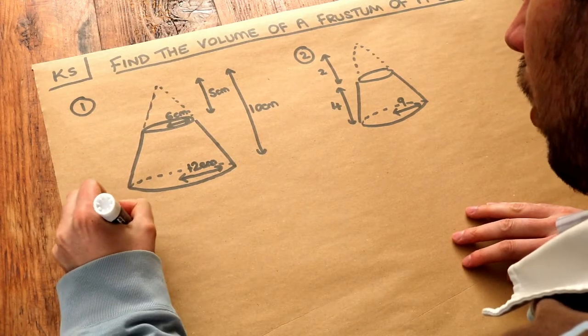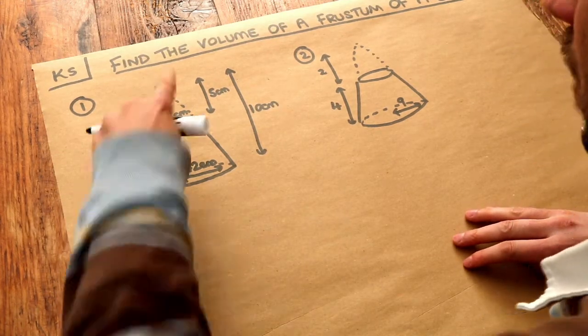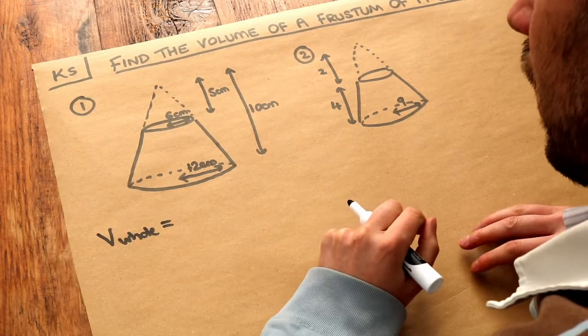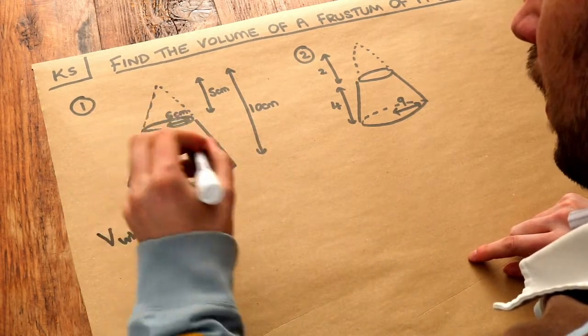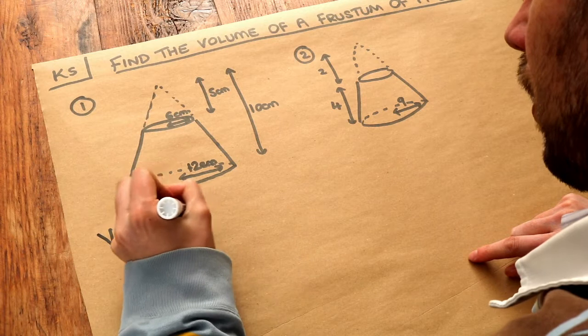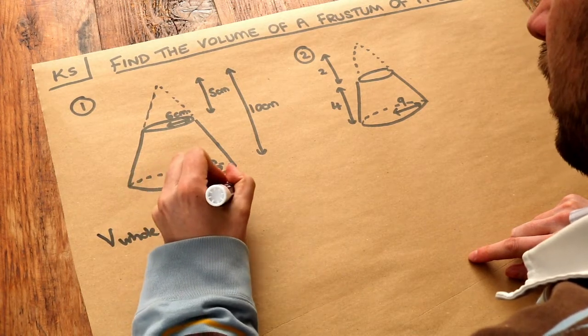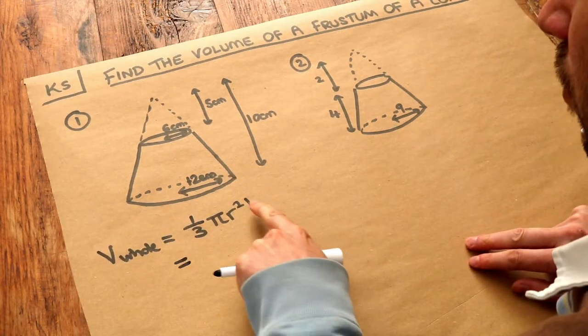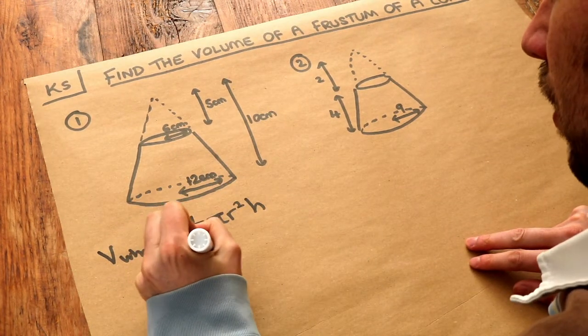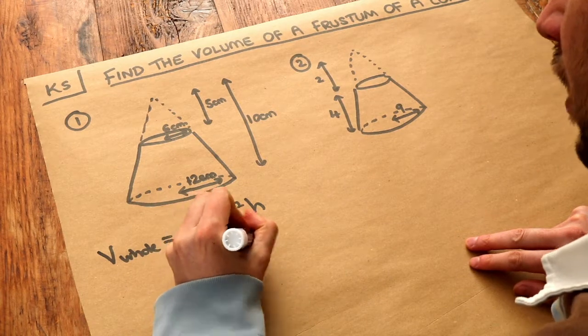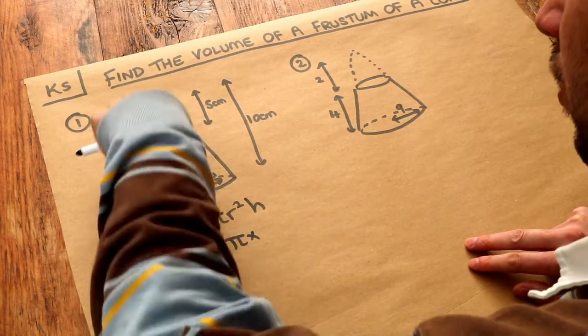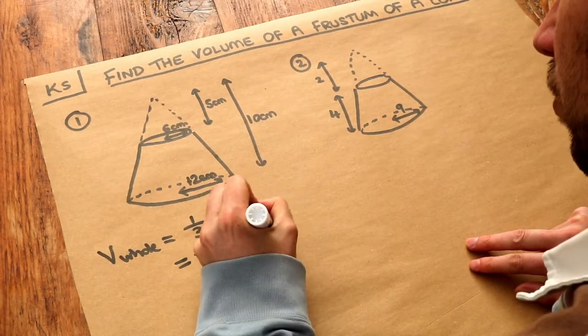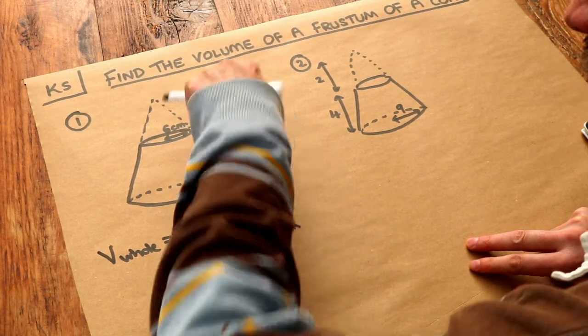The volume of the whole cone, the big one. Now do you remember that the volume of a cone is one-third times pi r squared times h. So we use the lengths here. We've got one-third times pi times the radius squared. What's the radius of the big cone? Well it's 12, so it's 12 squared. And what's the height of the big cone? Well it's 10.